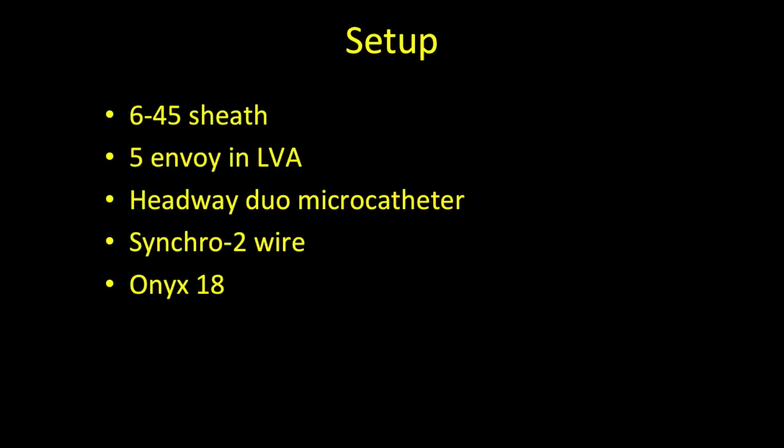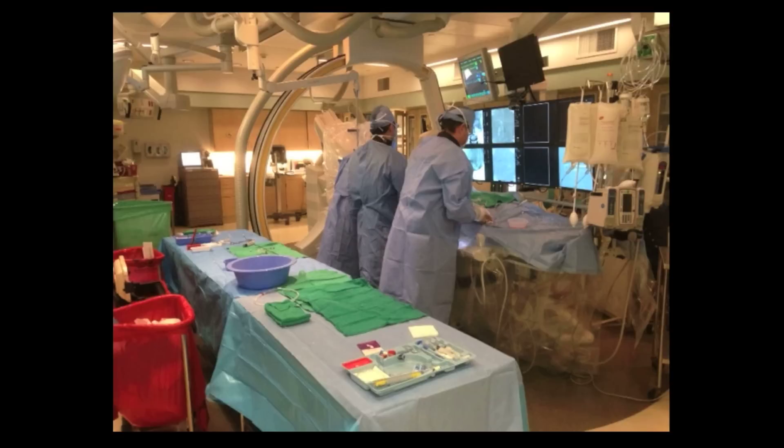For access in this 65-year-old patient, it helps to have good support. We used a 6-French 45 cm sheath seated in the descending aorta, through which we placed a 5-French Envoy guide catheter — a flexible guide catheter — in the left vertebral artery with a flexible guidewire. We used a Headway Duo microcatheter for selection of small intracranial vessels, a Synchro II wire for the selection process, and ONIX-18 as the embolic agent. A sterile table setup with a secondary table for dropping the embolic agent is used, and gloves are changed during embolization.